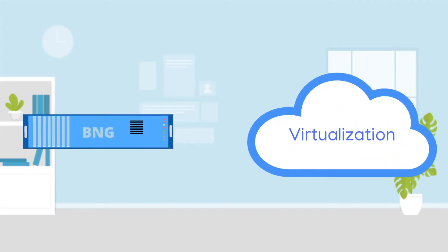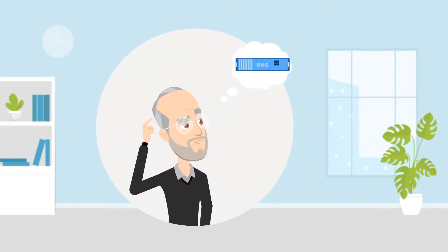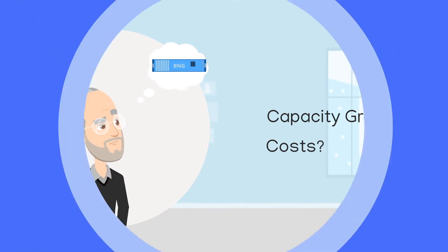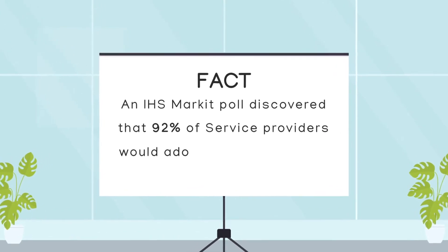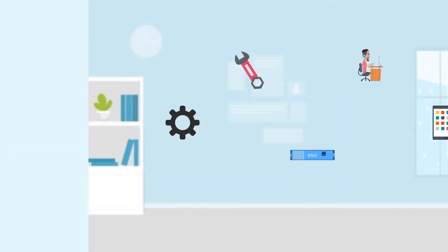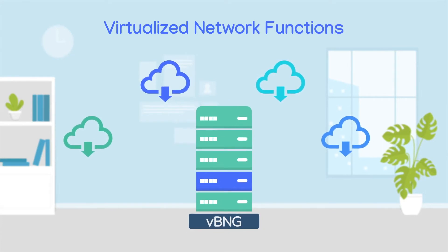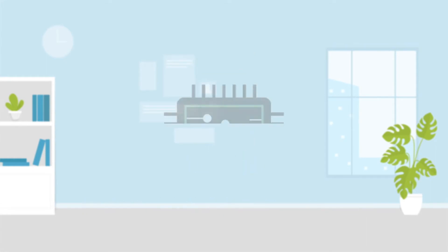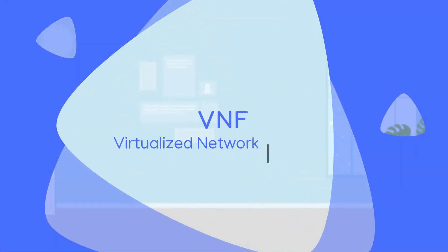Fortunately, as server virtualization technologies have matured for telecom-grade deployments in recent years, innovators began to rethink how BNGs are traditionally implemented in order to cope with the huge growth in capacity demand and reduce costs. And thus, virtual BNG was born. An IHS market poll discovered that 92% of service providers would adopt or plan to deploy VBNG. While a traditional BNG uses a hardware-centric approach, virtual BNG relies on virtualized network functions or VNFs to perform BNG's functions, and runs on general-purpose commercial off-the-shelf hardware. This means VBNG replaces purpose-built silicon chips used in traditional BNGs with VNFs or virtualized network functions.